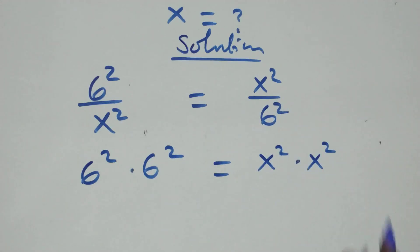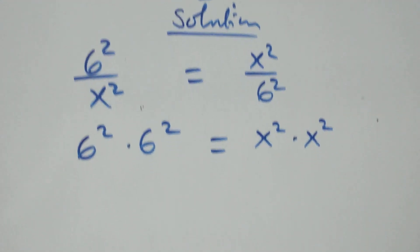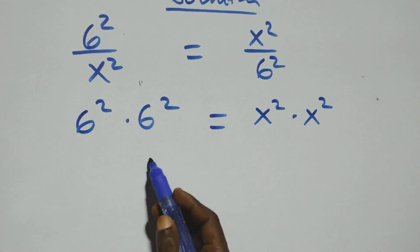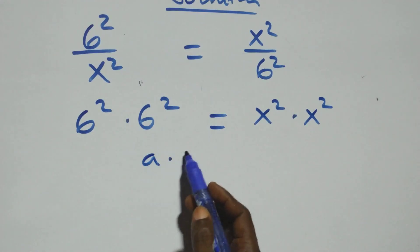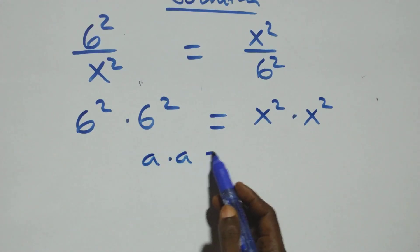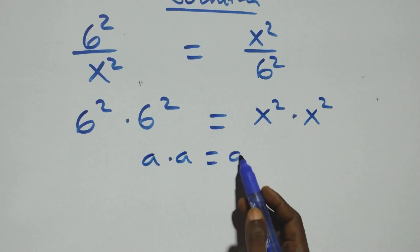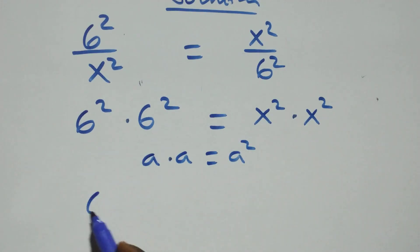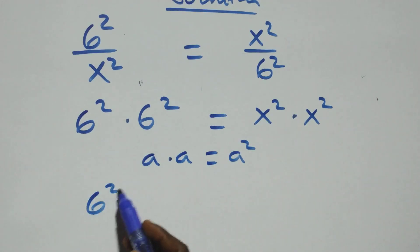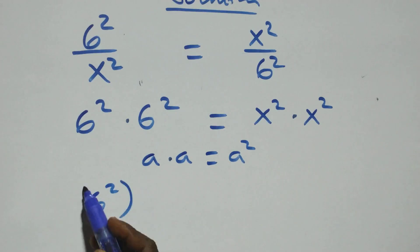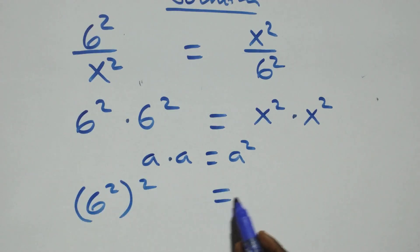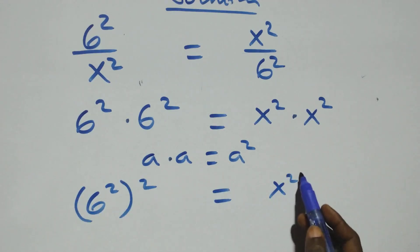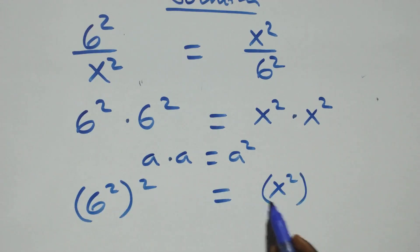The next step here: this follows when we have the same thing multiplying — a times a can be written as a squared. So this same thing multiplying here, we can write it as 6 squared, all squared, then equals to x squared, all squared.